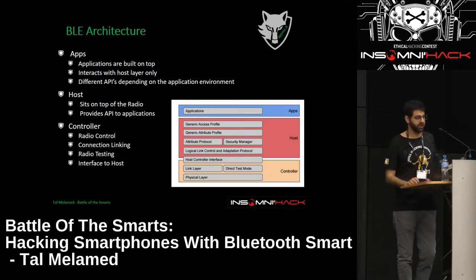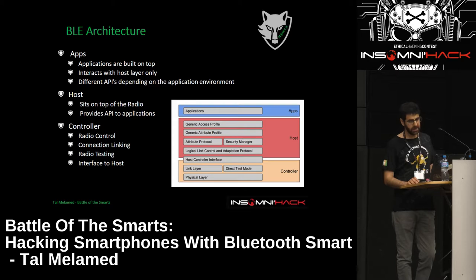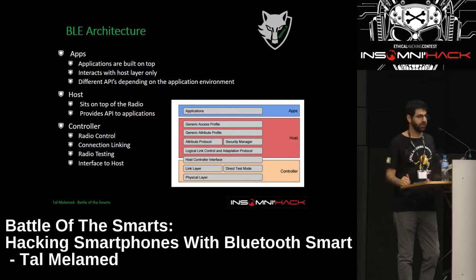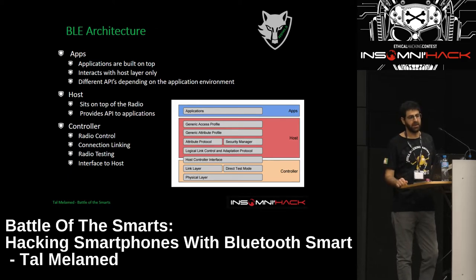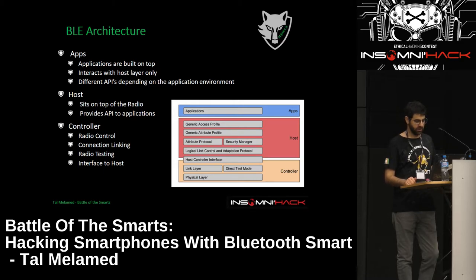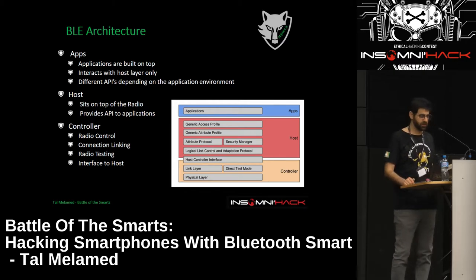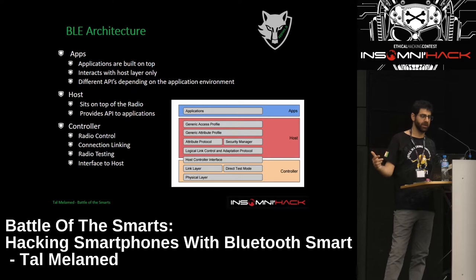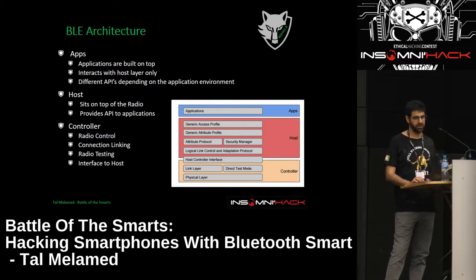Let's briefly review the architecture of BLE. It is based on three layers. The Controller, where all the actual hardware controls are — physical layer, chips, and the interface for the host. The Host provides the API for the controllers so we can use them. It also holds the infrastructure including the security manager and other security controls. And then there is the interface for the app layer — we want to build apps that communicate with the devices.